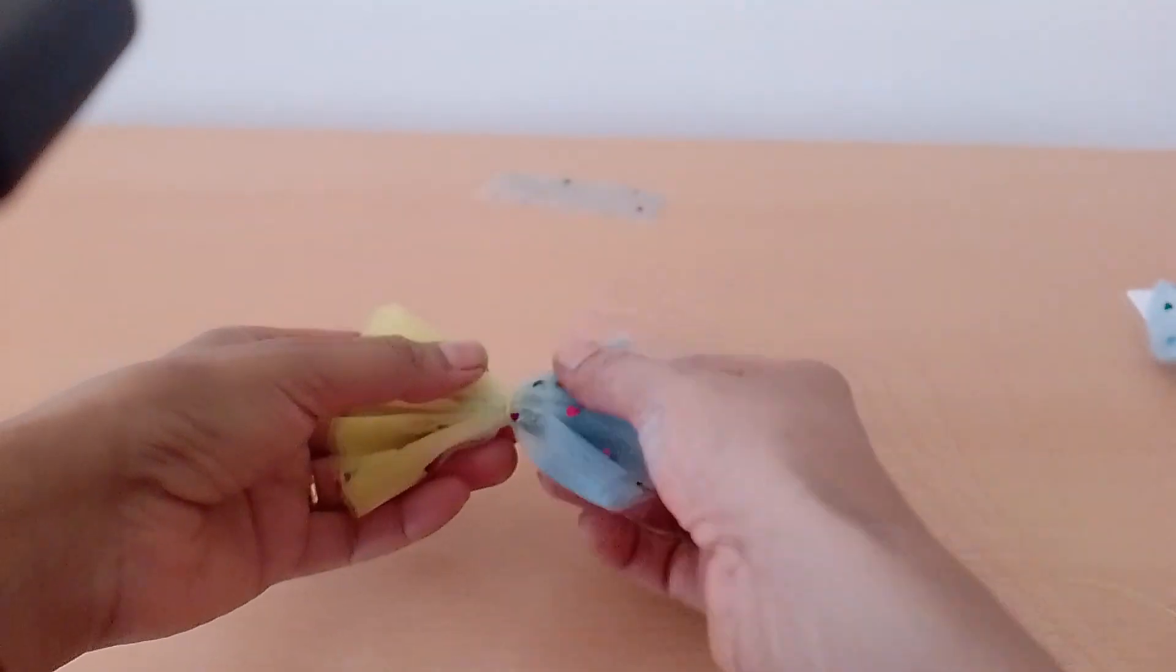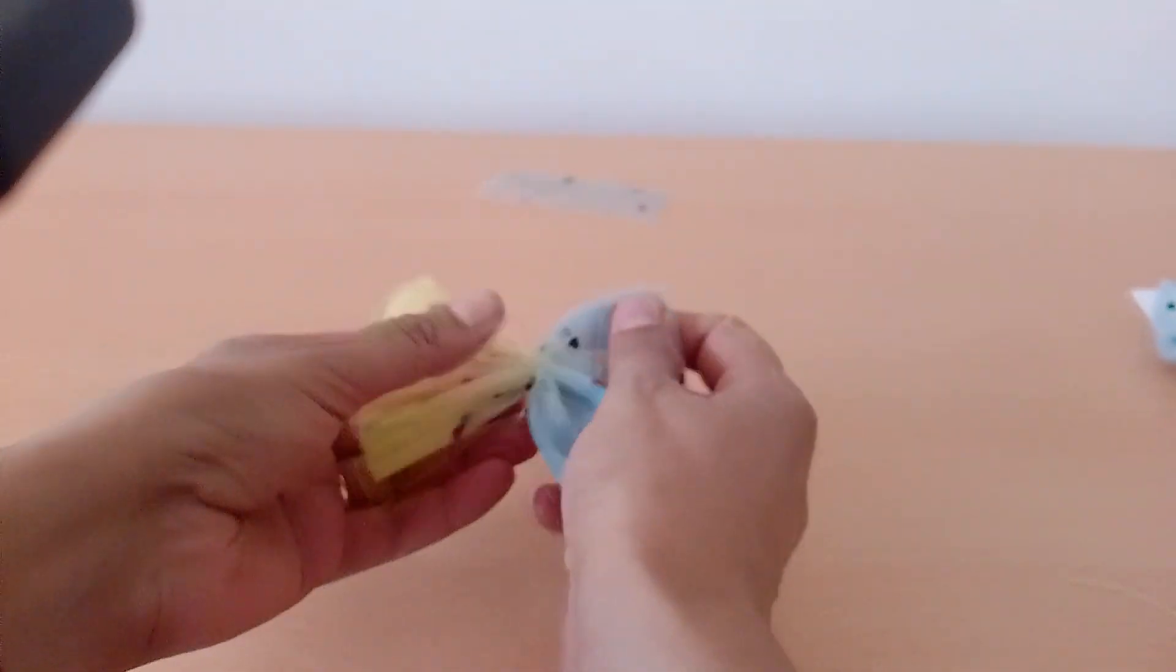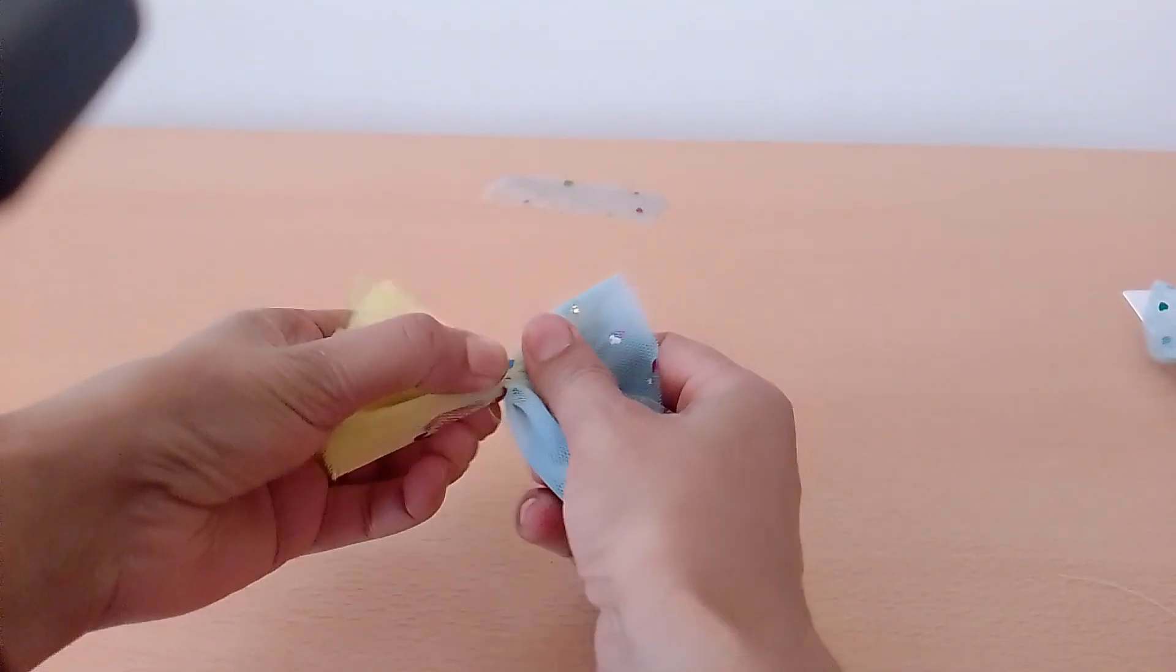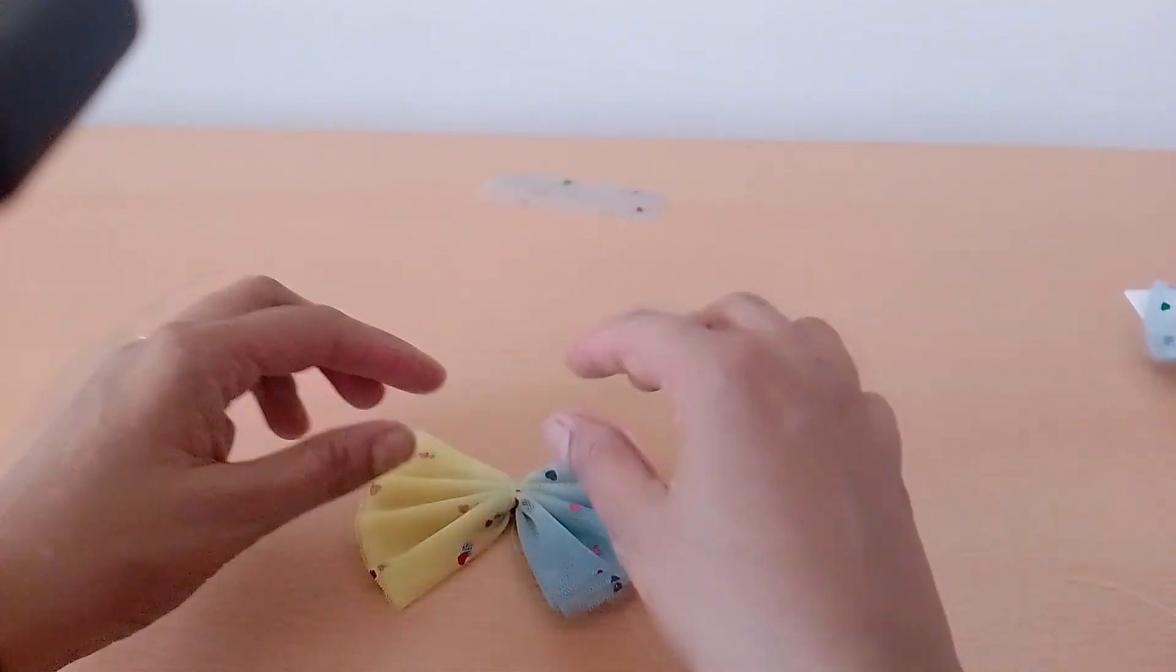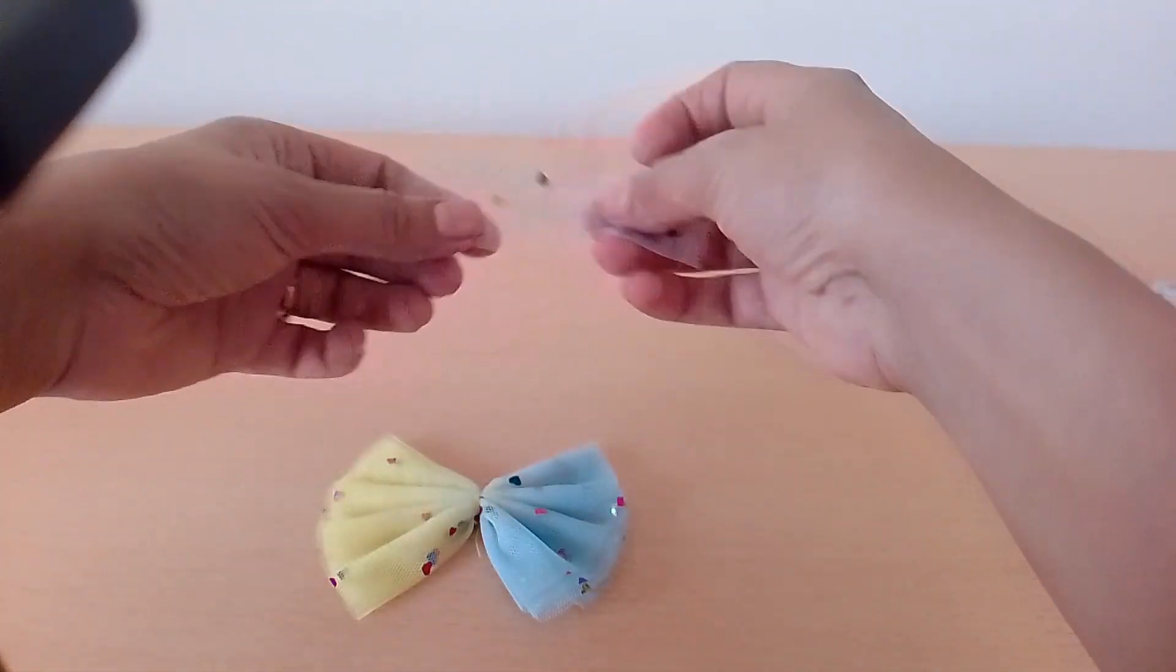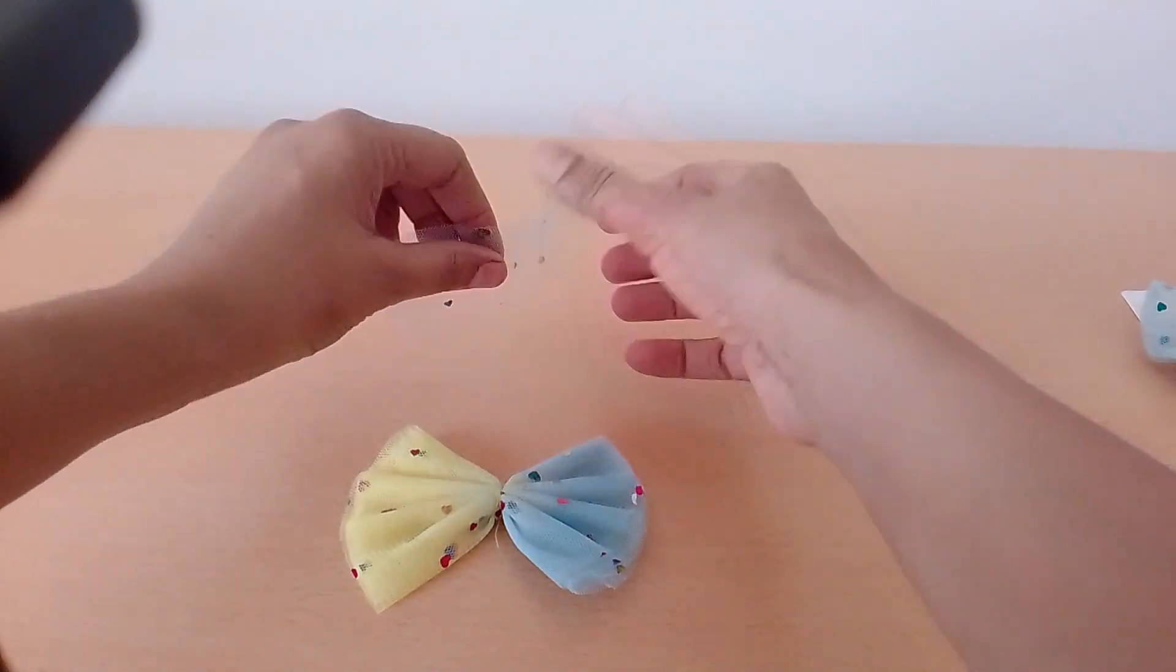And then we will take a small strip and after folding that strip we will tie the knot with the help of this small strip like I will show you.